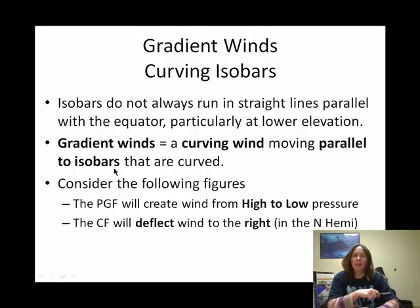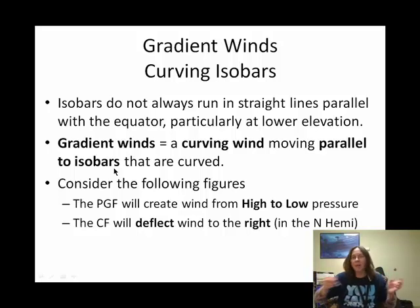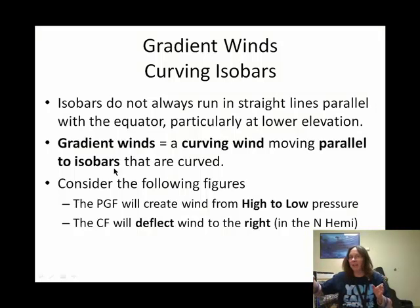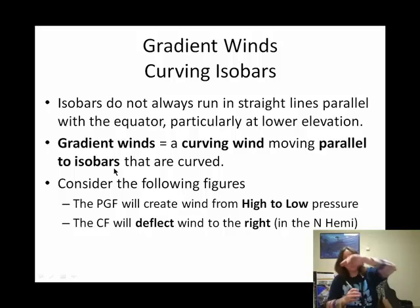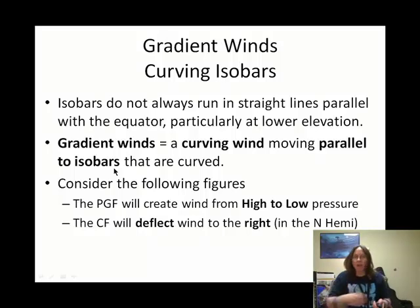Geostrophic winds are similar to gradient winds. Gradient winds account for the curvy nature of those isobars you saw on the 500 millibar isobaric map a few slides ago. Not always do we have isobars that are parallel to each other like at upper elevations, so gradient winds are basically the winds that flow around those curvy isobars.